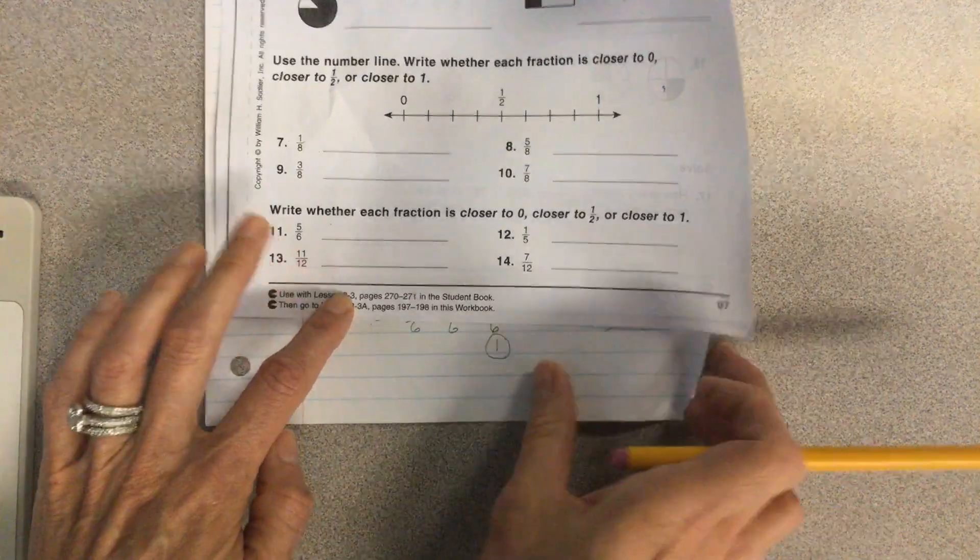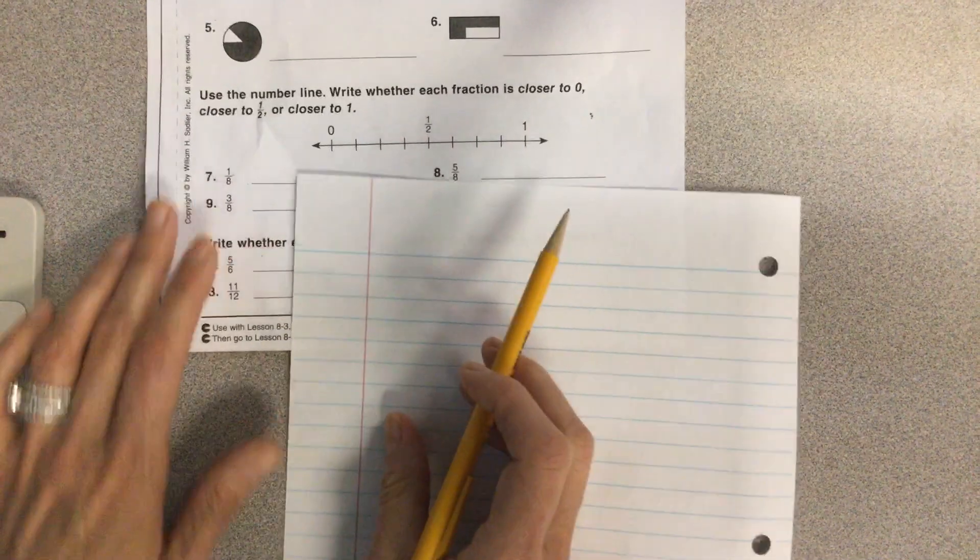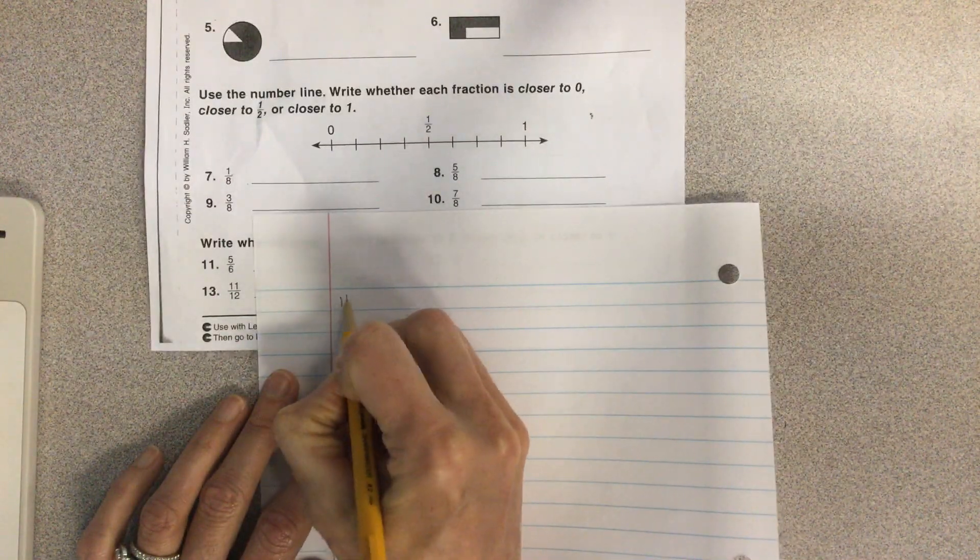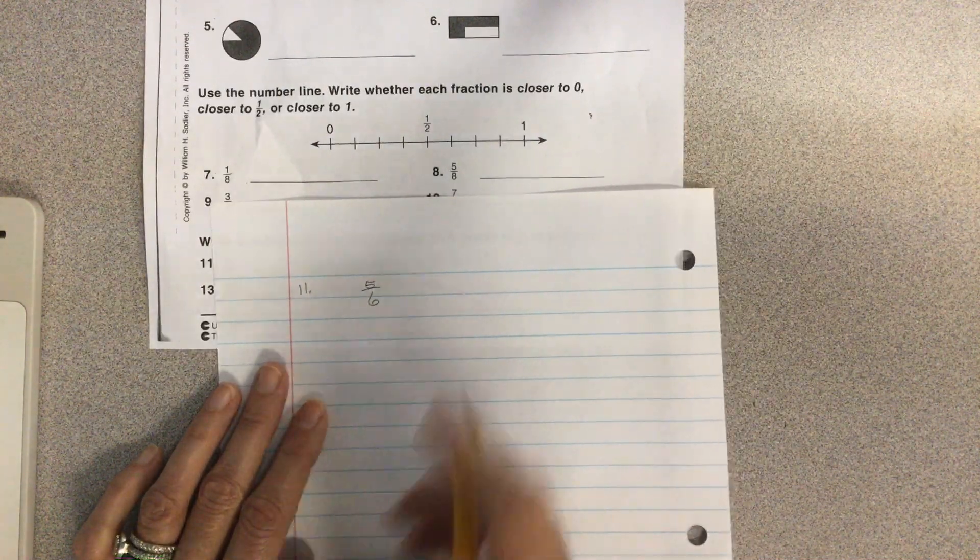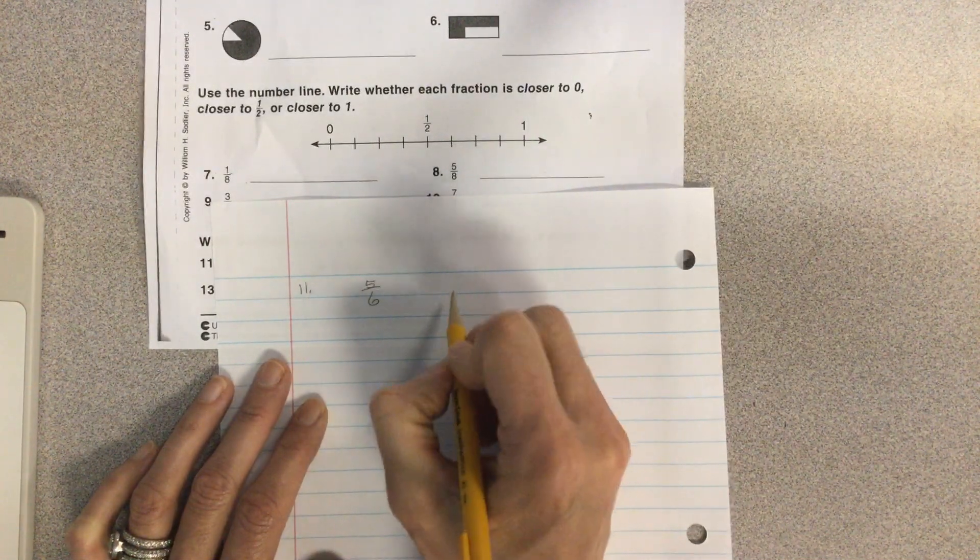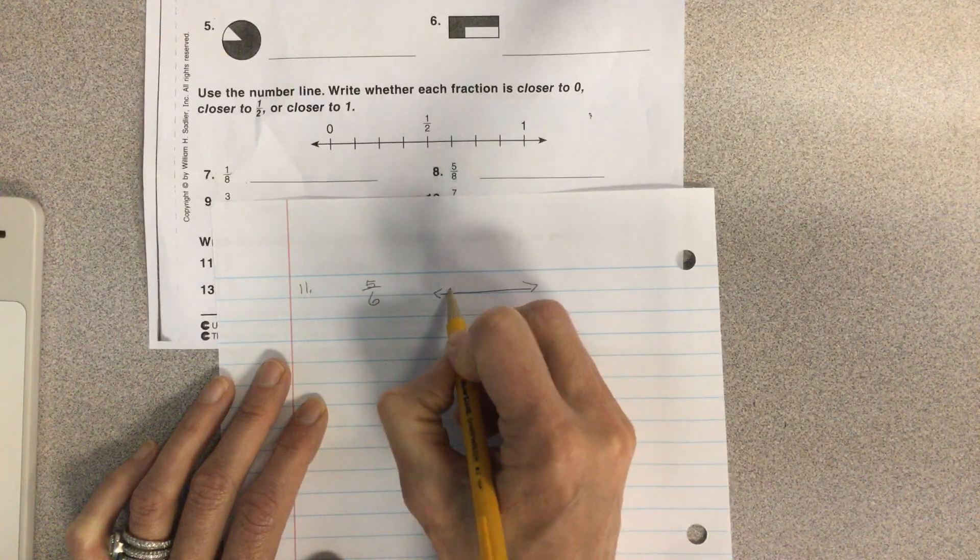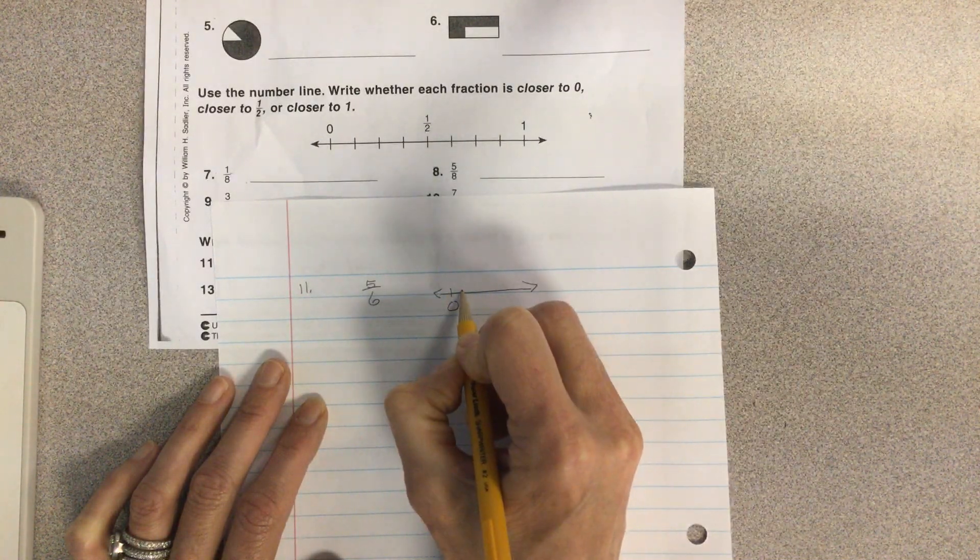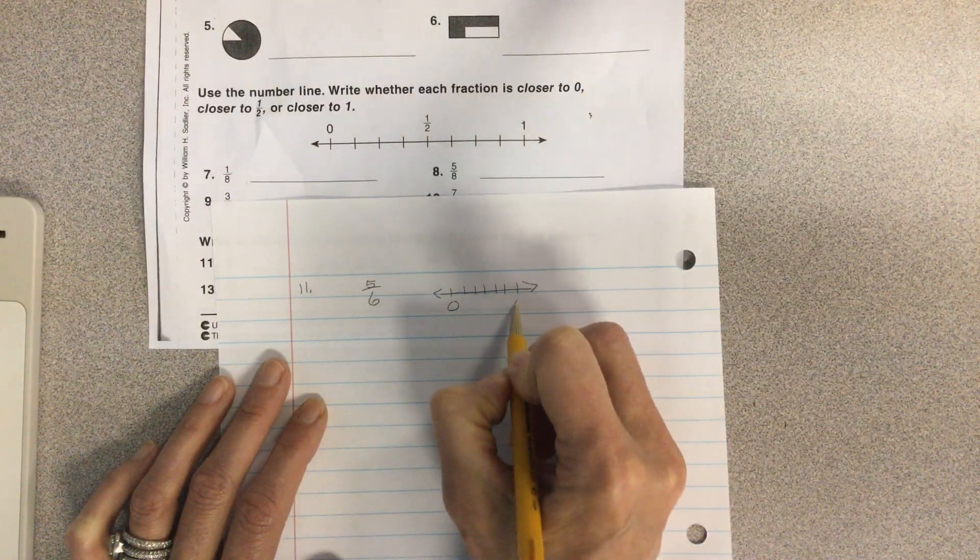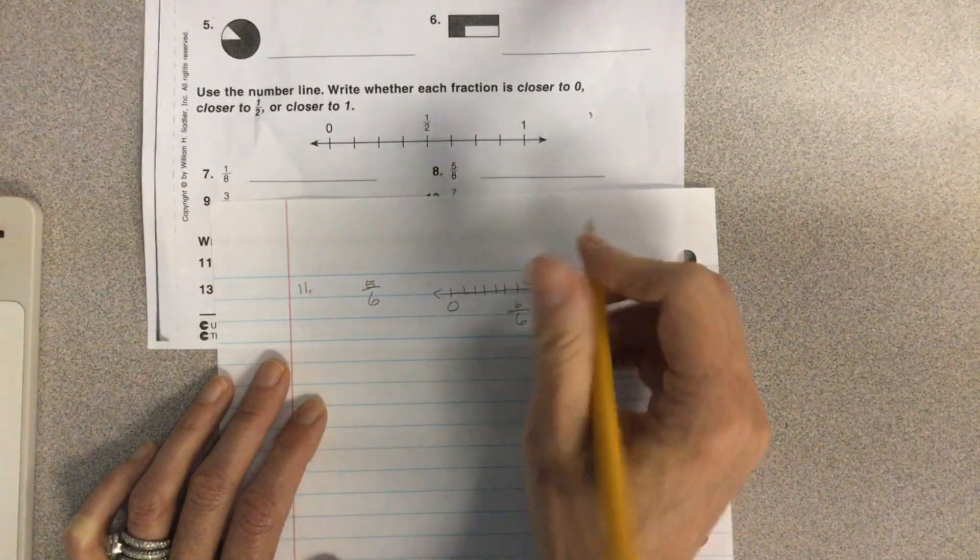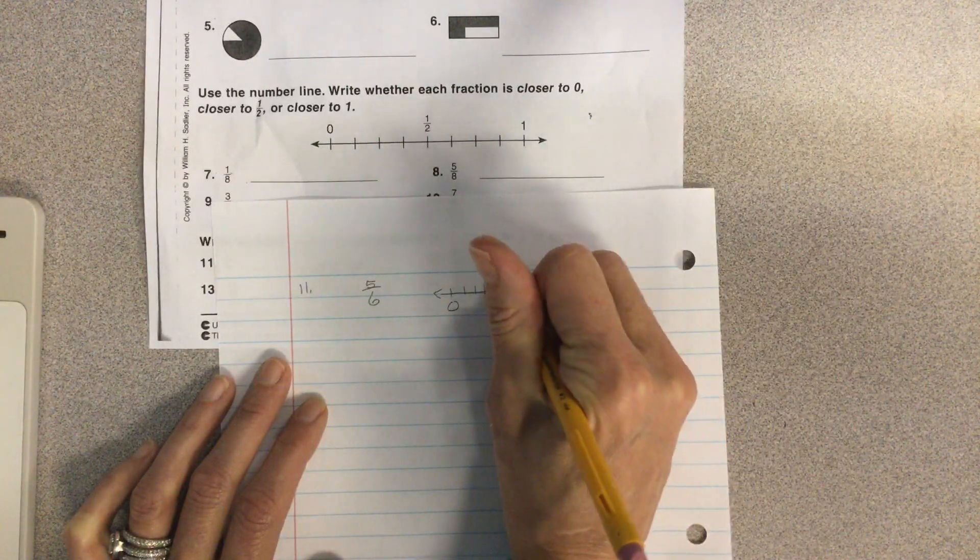So let's take for instance number 11. And we'll work that out on our paper. So number 11, the fraction is five sixths. And we're trying to decide if that's closer to zero, closer to one half, or closer to one. So if I make a number line, zero, remember I count all the other spaces, one, two, three, four, five, six, because my denominator is a six. That's six sixths, just like the one we just did on the other side. And right here is going to be five sixths.